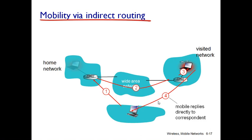The mobile node then contacts the correspondent directly. This is called indirect routing — the correspondent has to call the home network, from the home network the call is directed to the foreign network, and from there to the mobile node. This routing has several disadvantages and drawbacks.